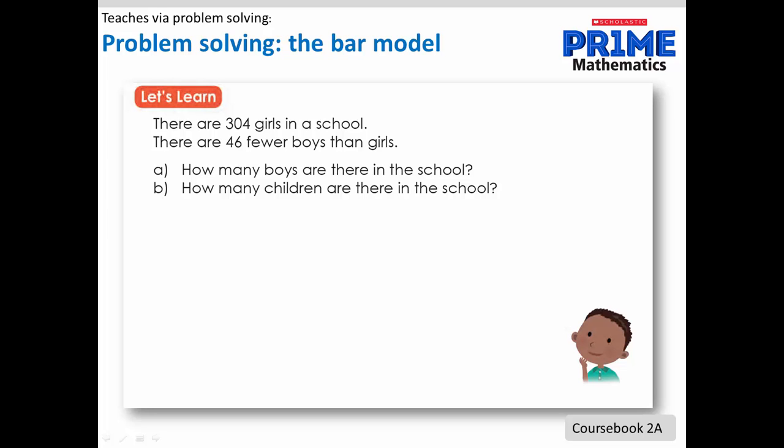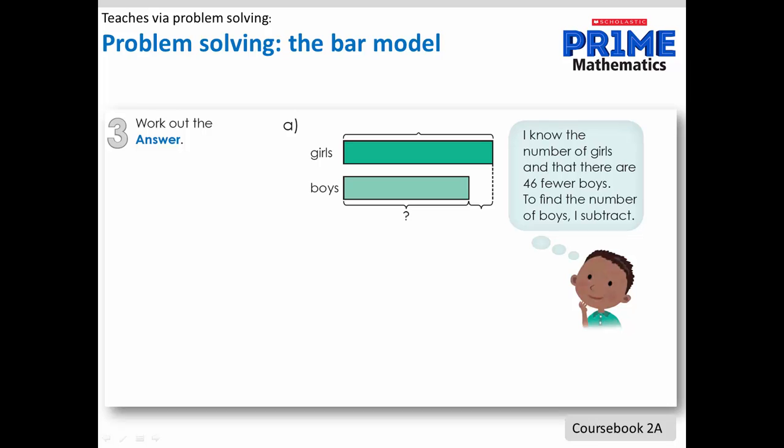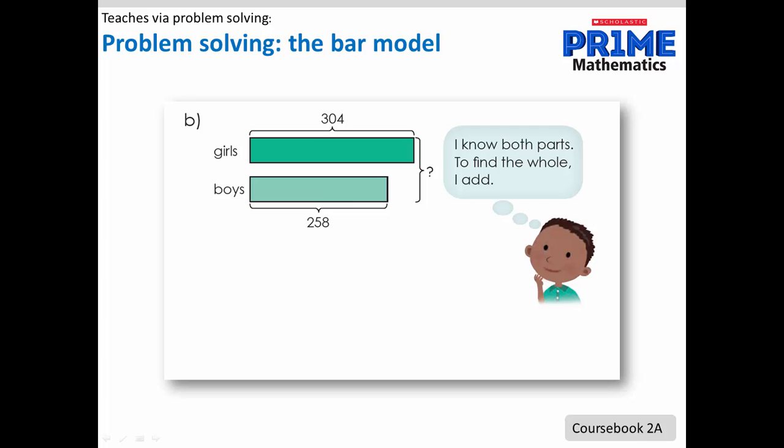This problem compares boys and girls, so a comparison bar model is used. The comparison bar model lines up the bars one underneath the other and labels the bars. In this case, girls and boys. What the students know is that there are 304 girls and 46 fewer boys. The thought bubble demonstrates the plan and strategy to use to solve the problem, which is to subtract. Using the pictorial abstract link, the algorithm and number sentence are shown to work out the answer.